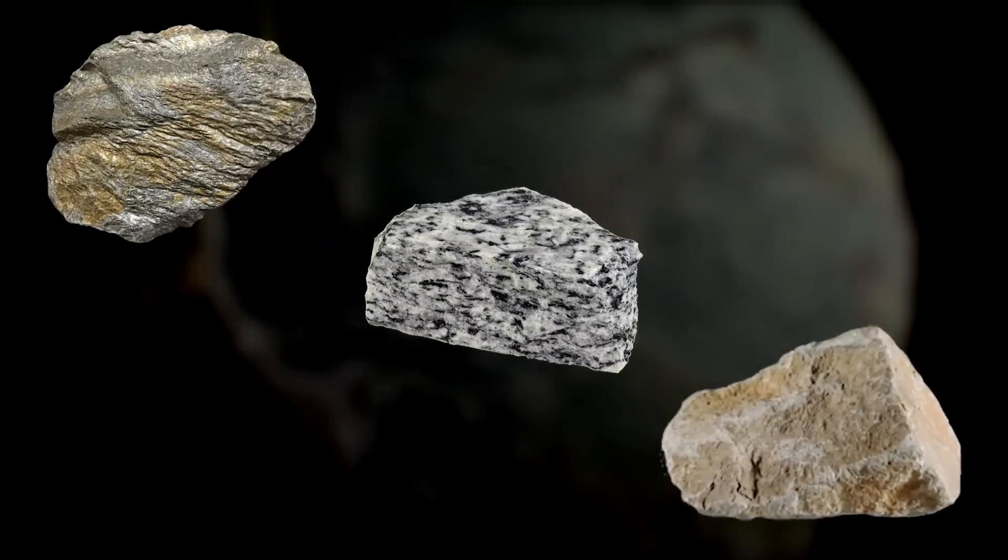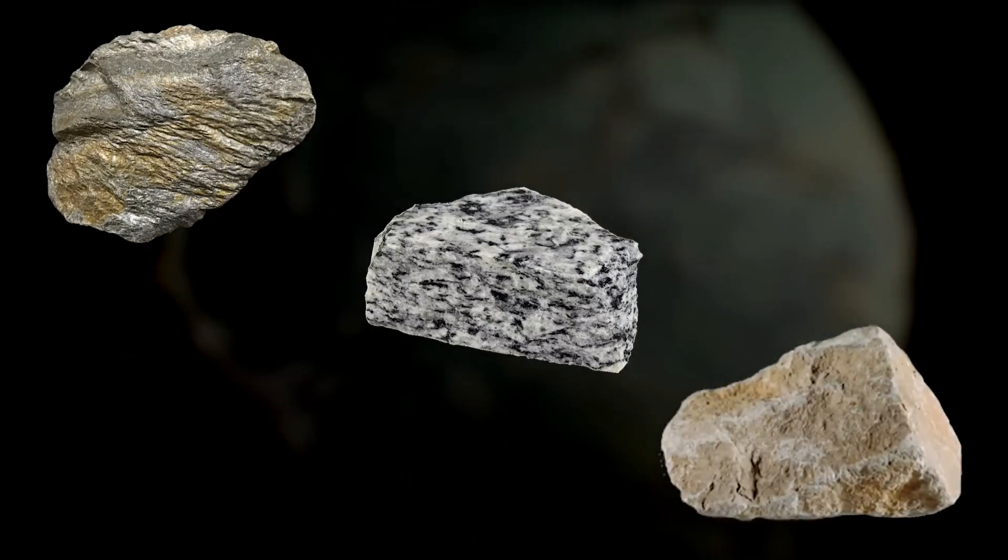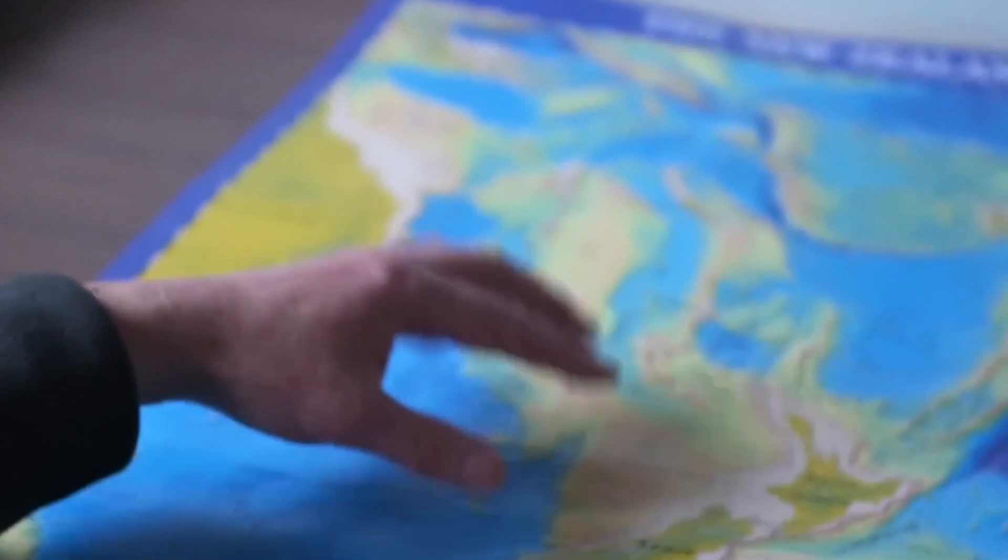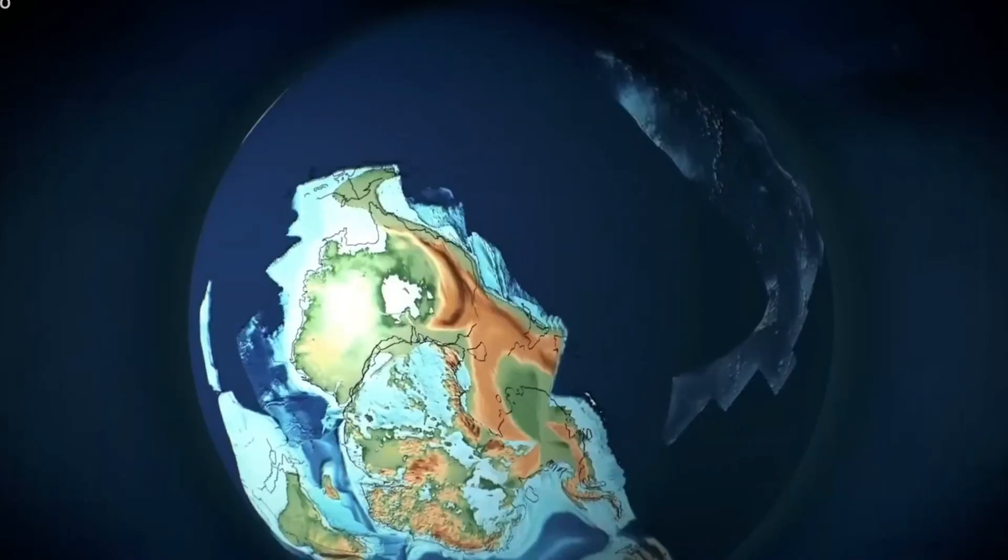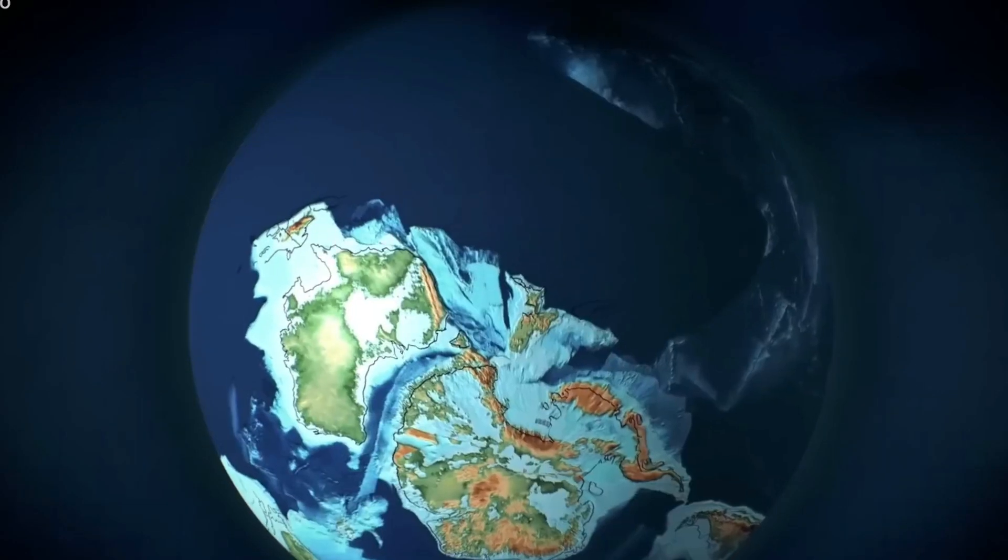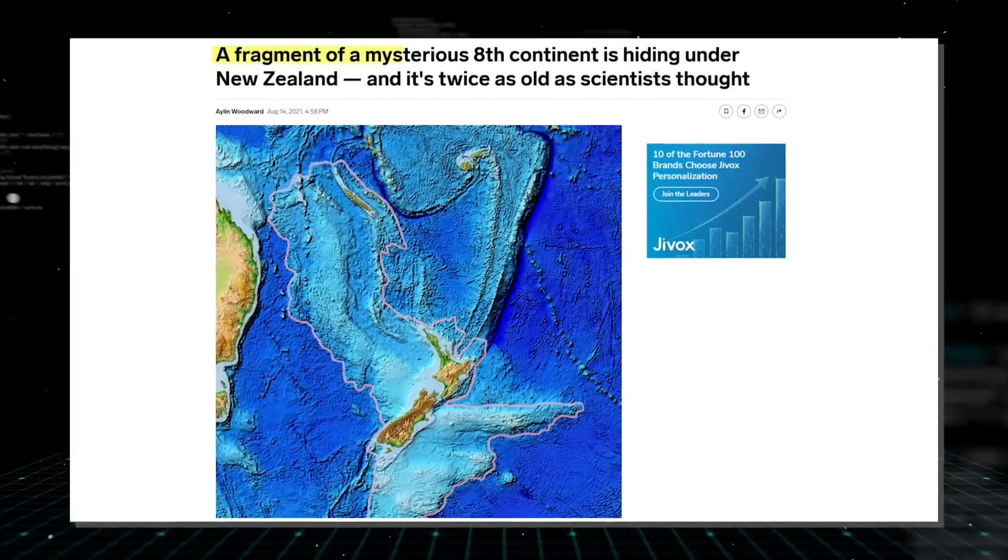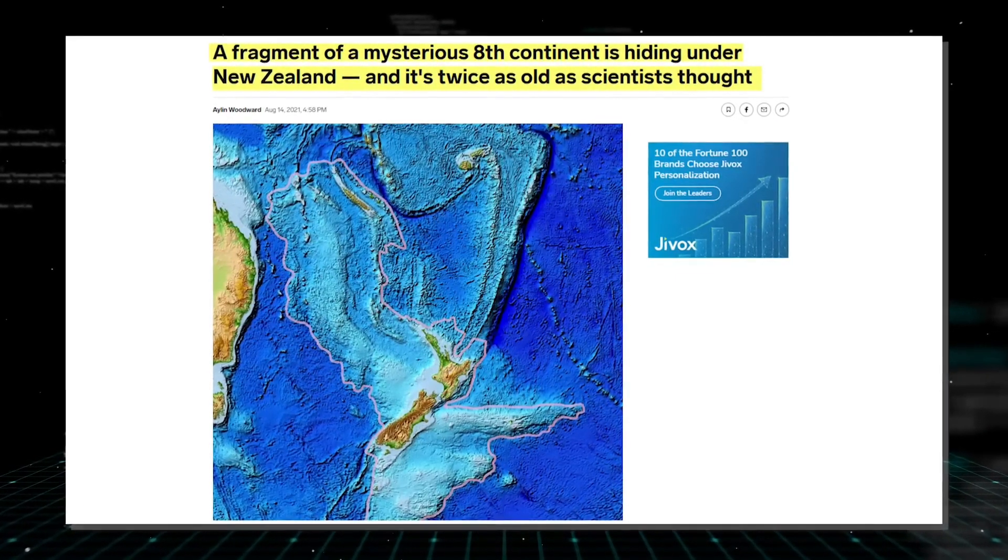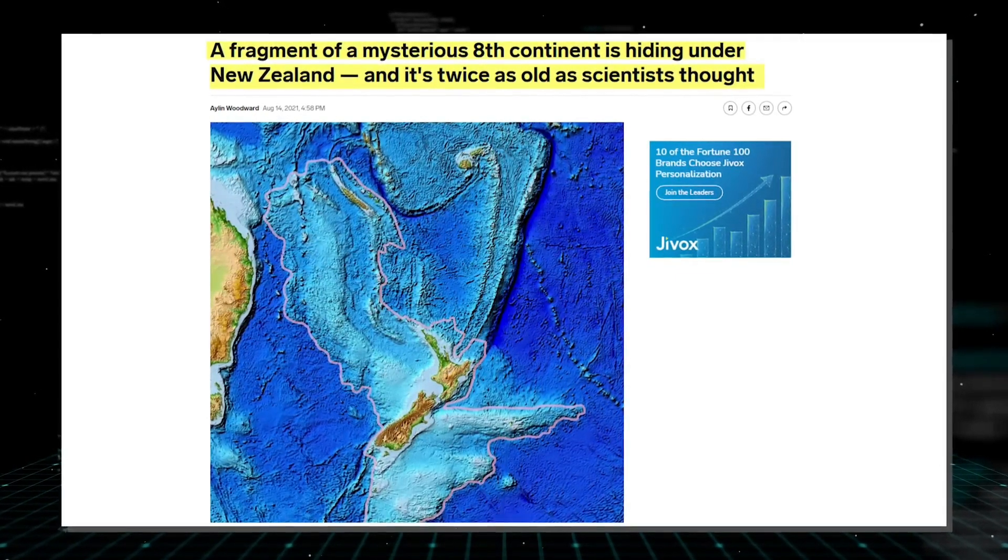However, there are still a lot of unknowns. It is still unclear how Zealandia, which is so thin, managed to keep its integrity and avoid breaking up into numerous small microcontinents, making it the eighth continent, which is particularly fascinating to geologists and somewhat baffling due to its odd beginnings.